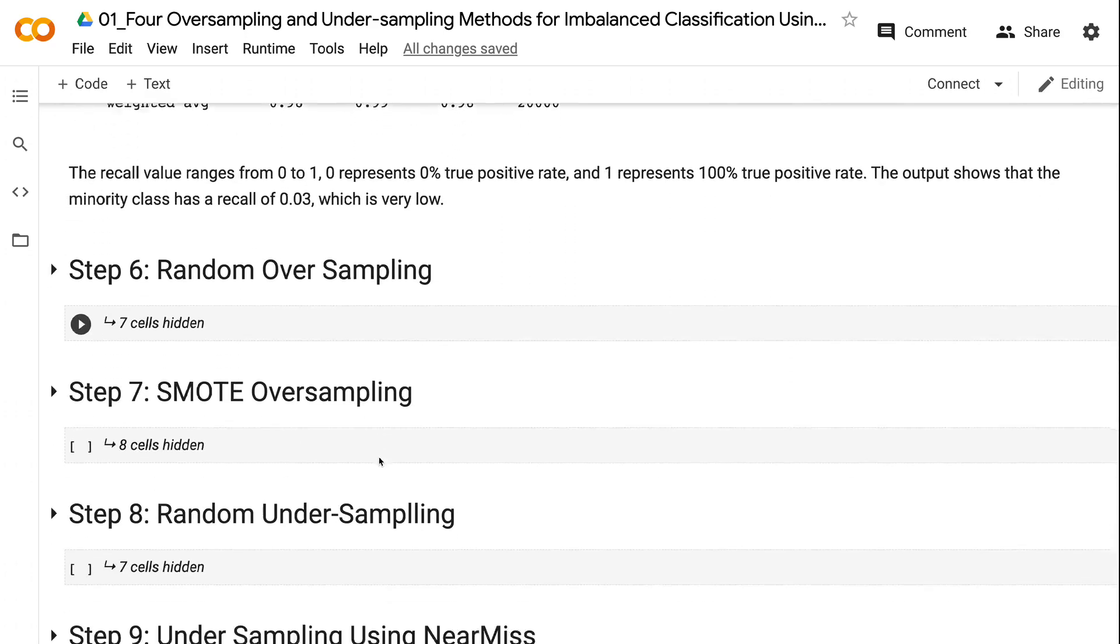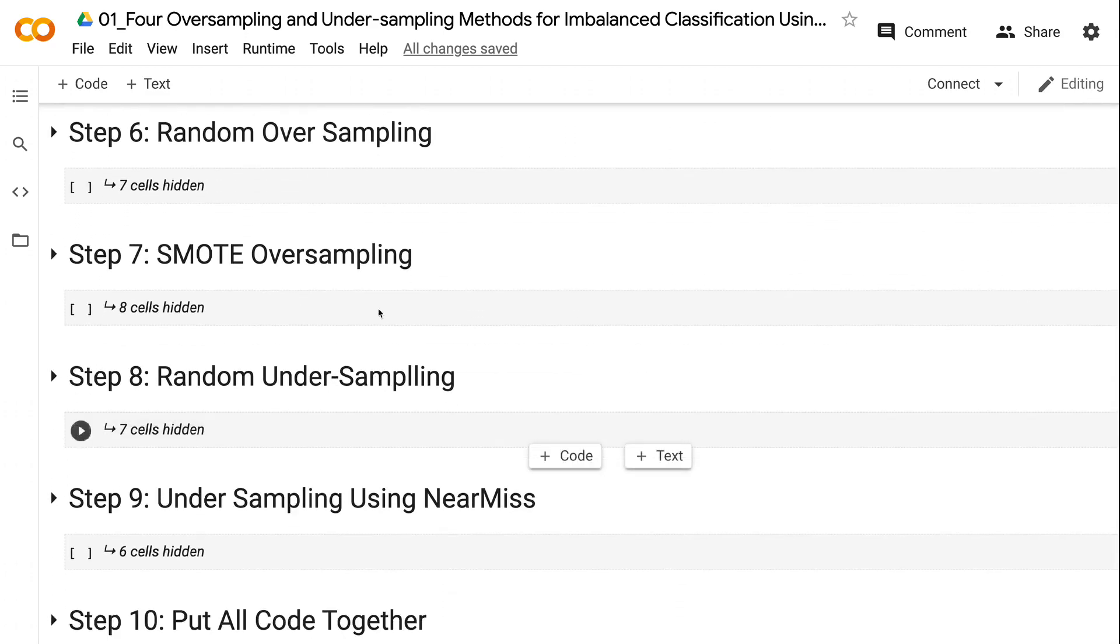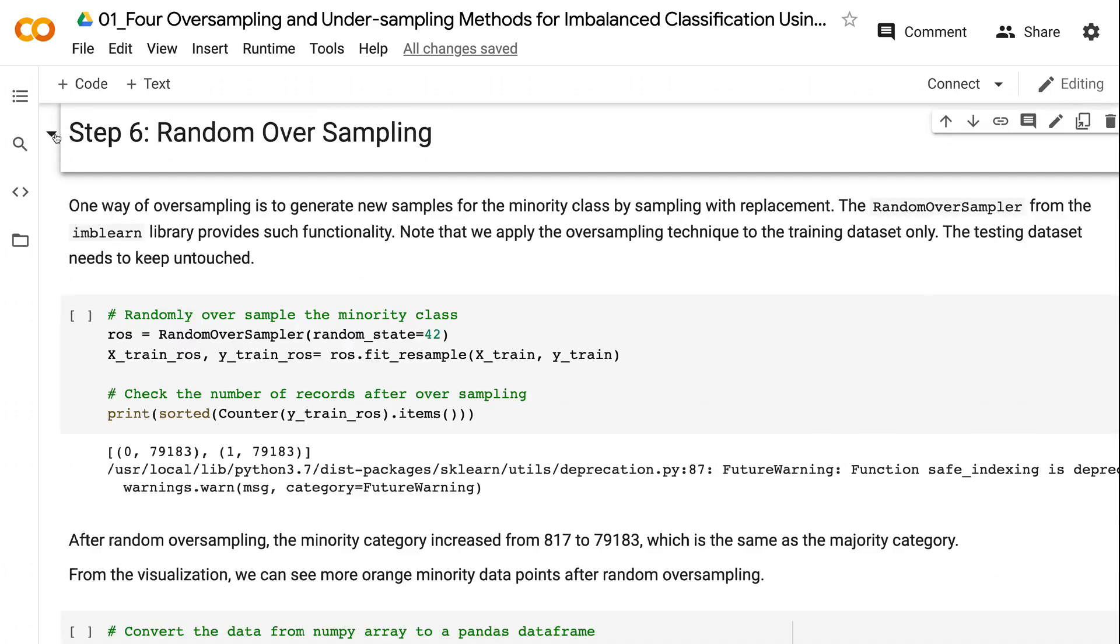One way of oversampling is to generate new samples for the minority class by sampling with replacement. The random oversampler from the imbalanced learn library provides such functionality. Note that we apply the oversampling technique to the training dataset only. The testing dataset needs to keep untouched.